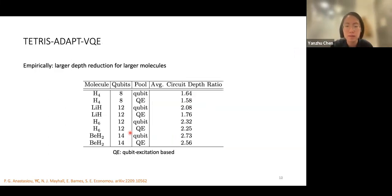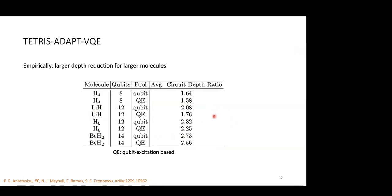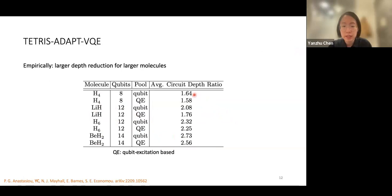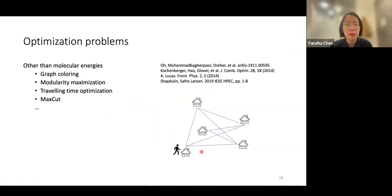Simulated results for different molecules with different bond dimensions show that for larger molecules the circuit depth reduction is actually larger, so empirically we are hopeful this will scale nicely to larger systems.